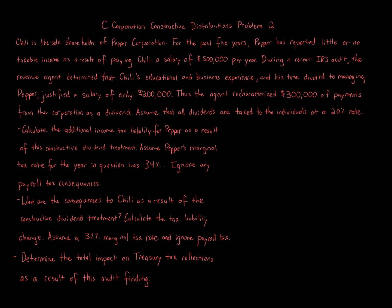C-Corporation Constructive Distributions Problem 2. Chili is the sole shareholder of Pepper Corporation. For the past five years, Pepper has reported little or no taxable income as a result of paying Chili a salary of $500,000 per year. During a recent IRS audit, the revenue agent determined that Chili's educational and business experience and his time devoted to managing Pepper justified a salary of only $200,000.